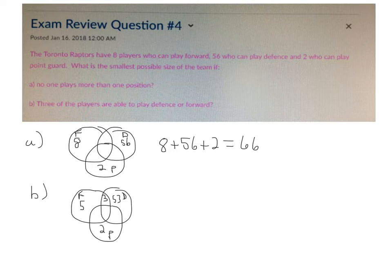So that changes the possible size of the team to five players, plus three players, plus 53 players, plus two players. And so that gives us a minimum possible size of the team of 63 this time, because of the shared players.